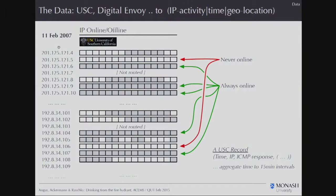There's a lot of interest at the moment in getting access to these novel datasets — from phone logs, internet logs, and so on. Let me tell you a bit more about this data particularly. Our observations consist of a time, an IP location, and what's called an ICMP response. That's one of the basic signalling protocols in the internet — it just says, 'are you on or are you off?' You get a piece of information back from the IP, and we can infer from that whether they're online, offline, or unused.